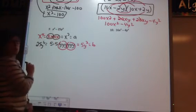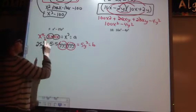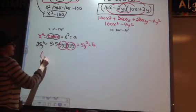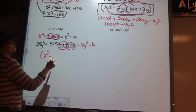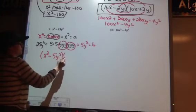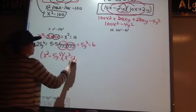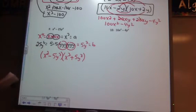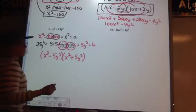Okay. Started with the binomial. I have perfect squares. And I have subtraction. So my a is x squared. My b is 5y cubed. Let's factor this out. Excuse me. Let's FOIL it.